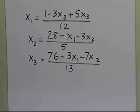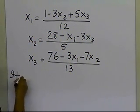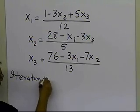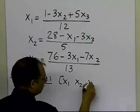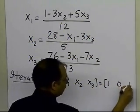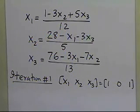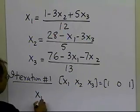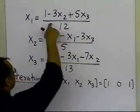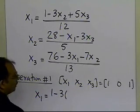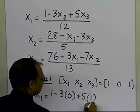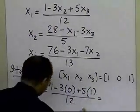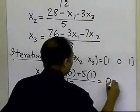Once we have that, we conduct the first iteration. The initial guess given to us is x1, x2, x3 equal to 1, 0, 1. Substituting into the first equation, x1 equals 1 minus 3 times x2 (which is 0) plus 5 times x3 (which is 1), divided by 12, and this turns out to be 0.5.